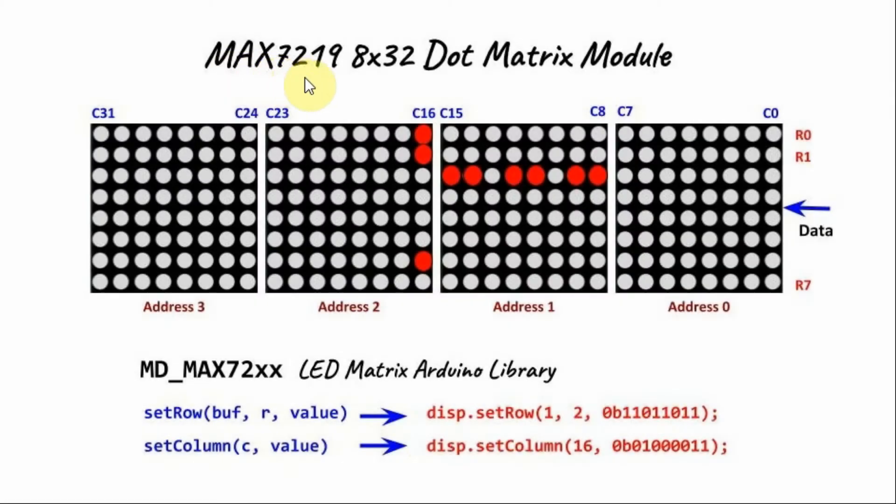The MAX-7219 module is 8 by 32 dot matrix module. It has 8 rows and 32 columns. It's a 4-in-1 module and the address of the first module is 0 and the second is 1, third is 2 and the fourth is address 3.